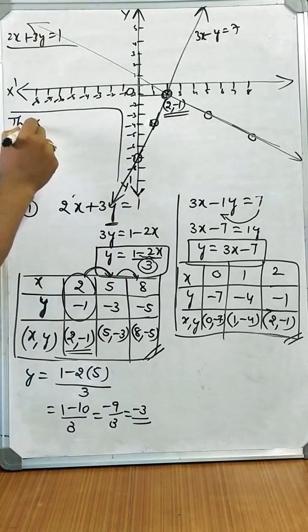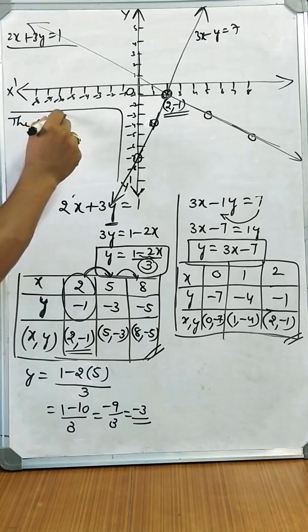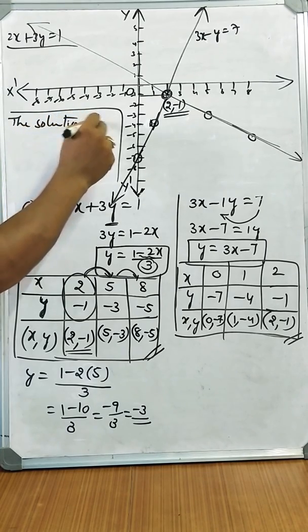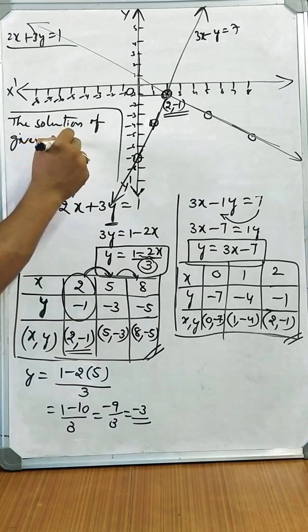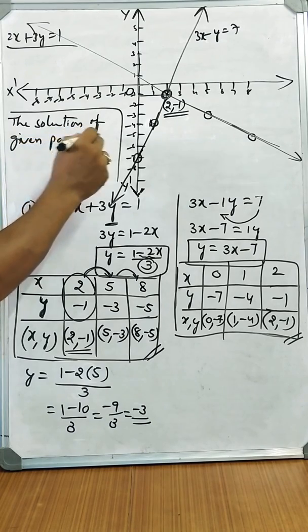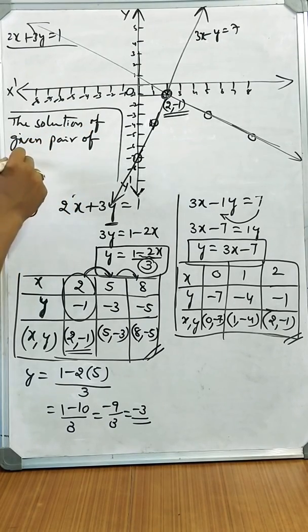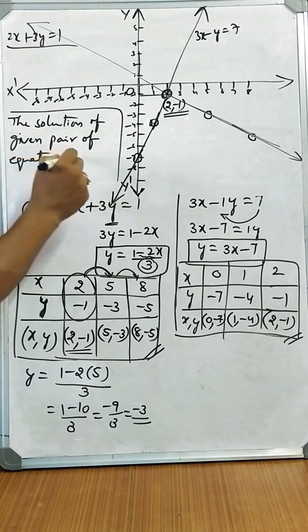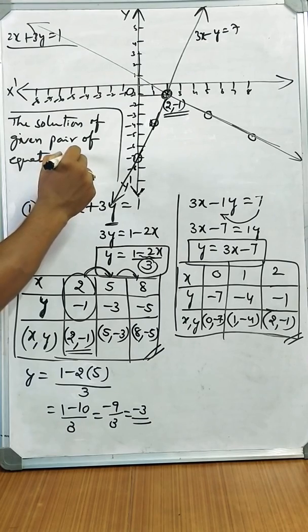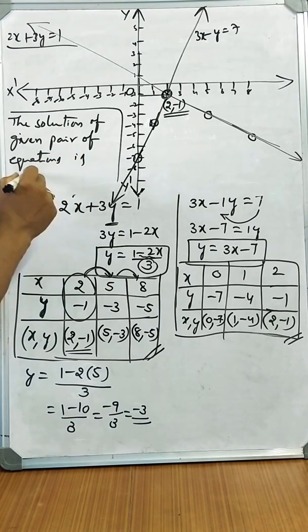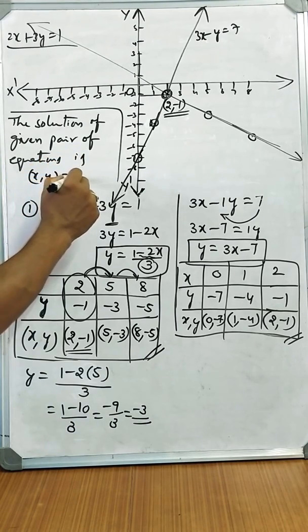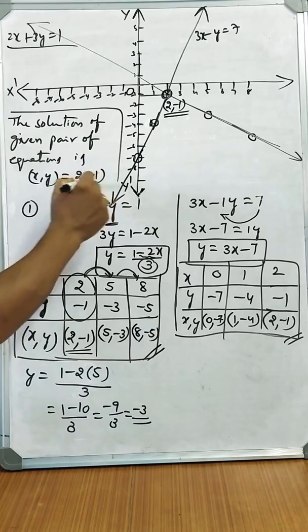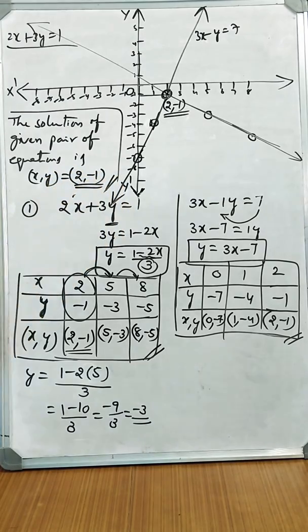Therefore, the solution of the given pair of equations is x equals 2, y equals minus 1. That's all.